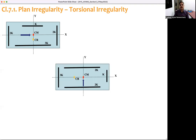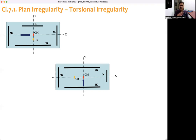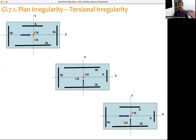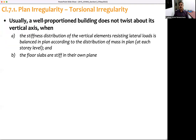Consider another case where the center of resistance is towards the left of the center of mass. In this case, when the inertia force acts at the center of mass, the building tends to twist in the anti-clockwise direction. In the earlier case it was clockwise; in this second case it is anti-clockwise. A combined case is also possible.